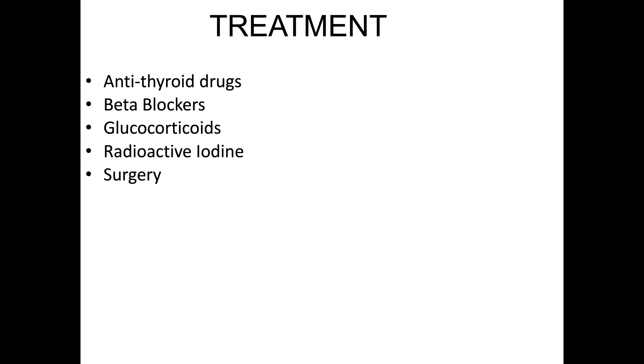The main medications are PTU, methimazole, and carbimazole, which inhibit the synthesis of thyroid hormone by blocking the action of the peroxidase enzyme and also inhibit the peripheral conversion of T4 to T3. Potassium or sodium iodide prevents the release of thyroid hormone into the tissue. Beta blockers, generally propranolol, block the high beta adrenergic response from catecholamines, reducing pulse rate and blood pressure. Glucocorticoids decrease hormone release and inhibit T4-to-T3 conversion. Radioactive iodine destroys follicular cells — about 80% will go into remission, but 40% to 70% will see hypothyroidism within 10 years. Surgery has about a 95% remission rate.